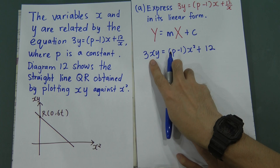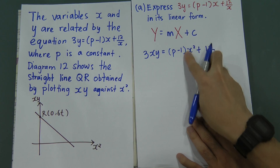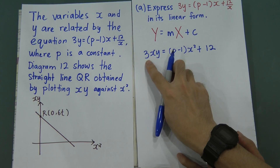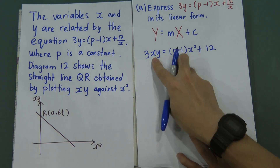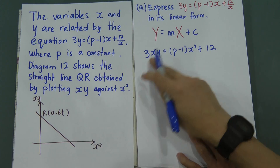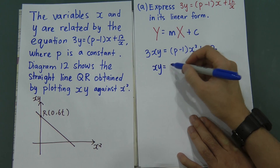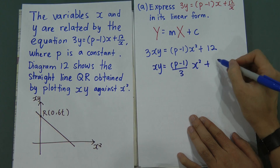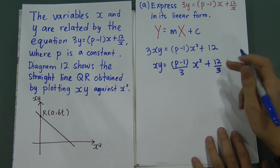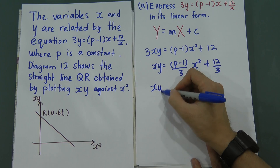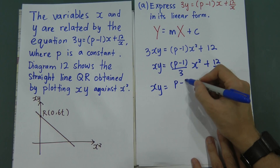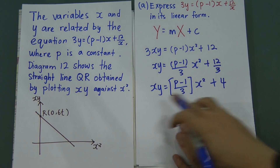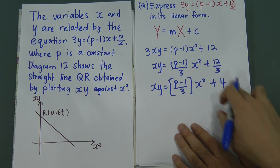Now we have xy and x² in the equation. But the Y side can only have xy, not 3xy, so we divide everything by 3. After dividing, we get xy = (p−1)/3 · x² + 4. When you reach this form, this is the linear form.